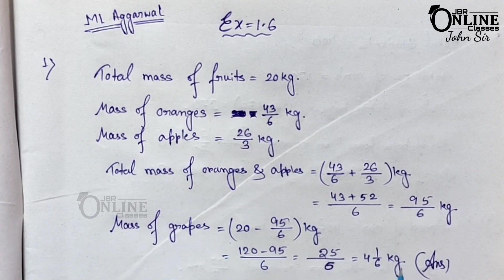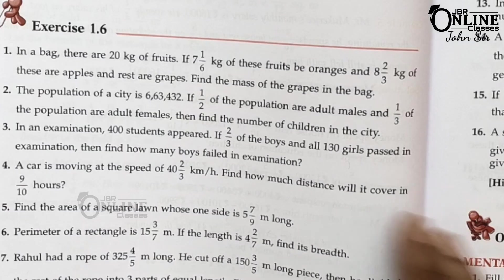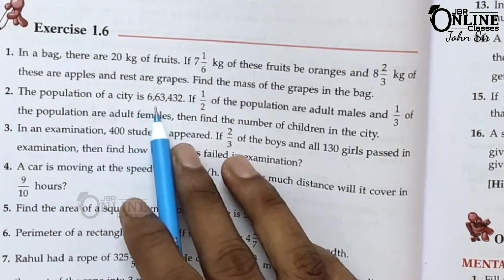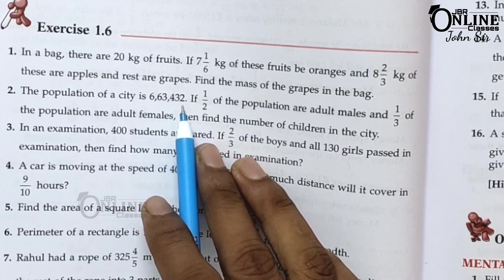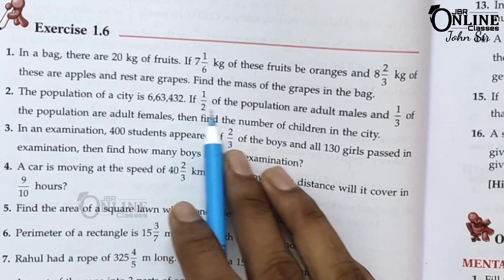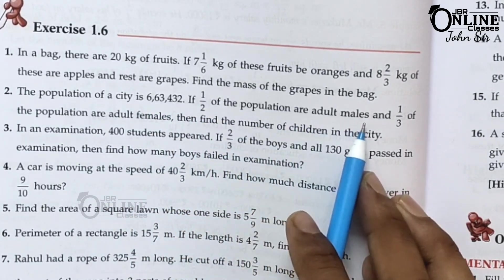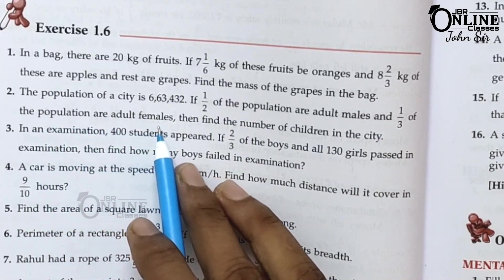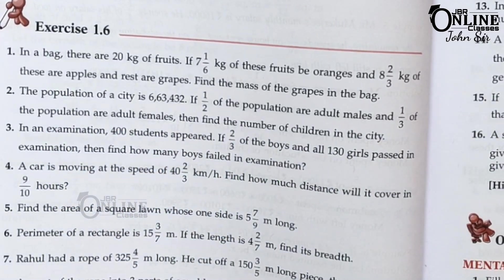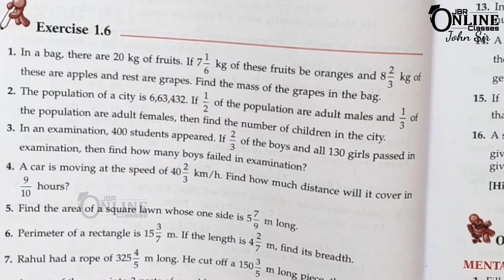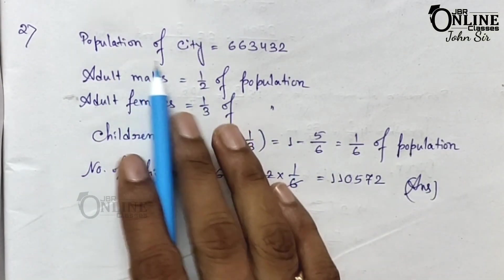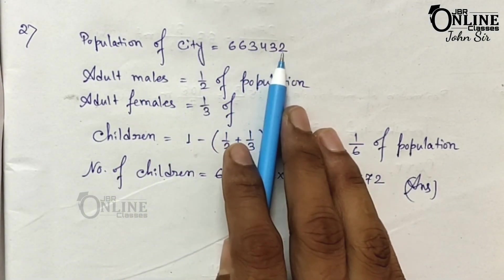Sum number 2: the population of a city is 663,432. If half of the population are adult males and 1/3 of the population are adult females, then find the number of children in the city. Total population equals 663,432.